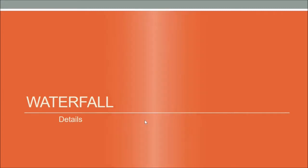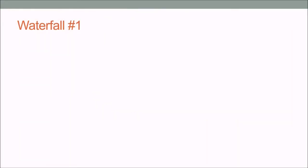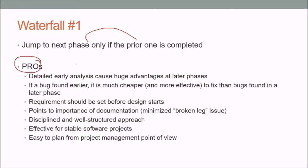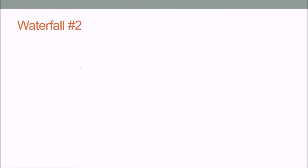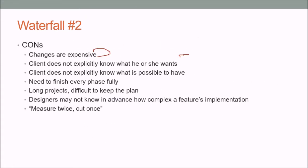For waterfall, remember: jump to the next phase only if the prior one is completed. Pros include detailed early analysis, cheaper bug detection in early phases, clear documentation, and a disciplined approach effective for stable projects. Cons include expensive changes, unclear client requirements, need to complete every phase fully, long project timelines being hard to manage, and difficulty estimating feature complexity in advance. That was the software development methodologies — thank you.